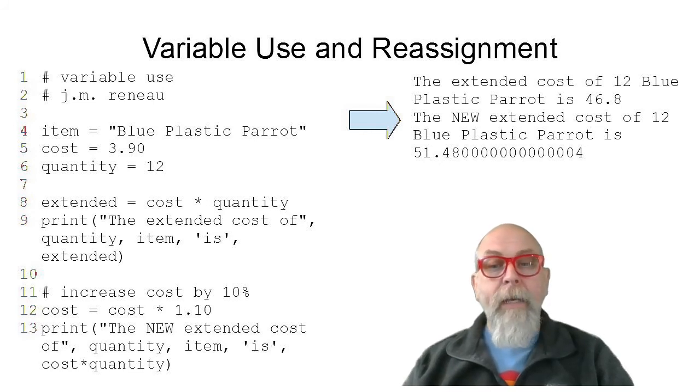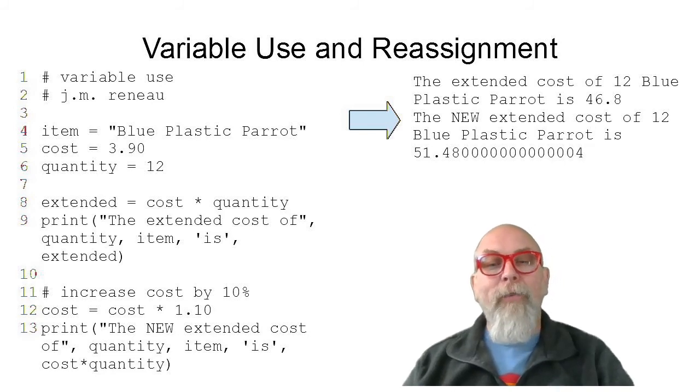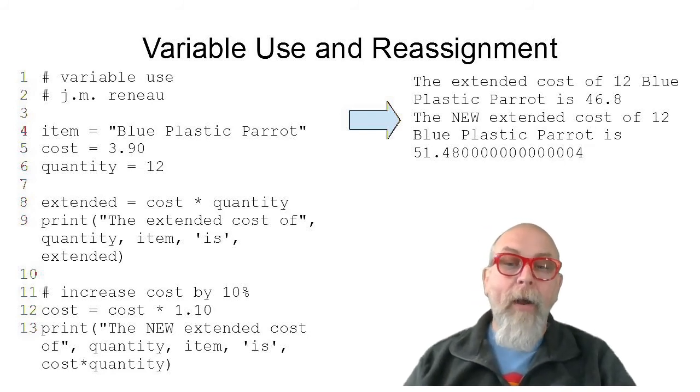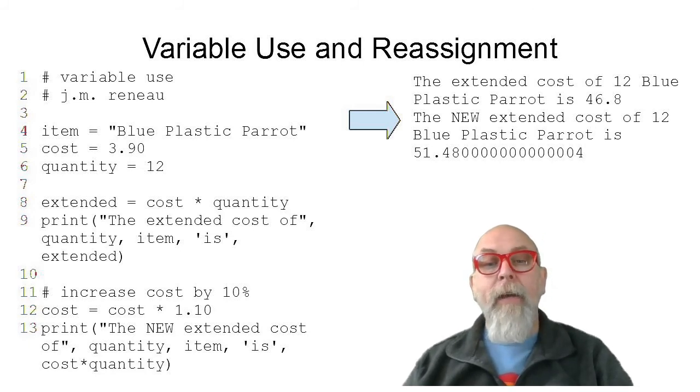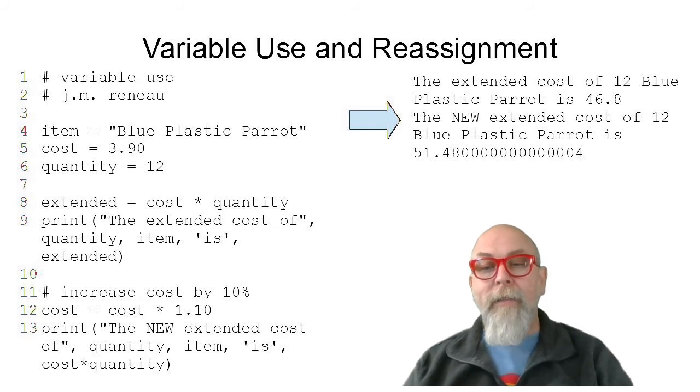Line nine is an example of a print with multiple arguments and you can see it prints the extended cost of quantity item. So that gets the quantity and then it gets the string and item is and it gets the value from extended. And so line nine gets the value from item, the value from quantity, and the value from extended and prints that first line, the extended cost of 12 blue plastic parrot is 47.76.